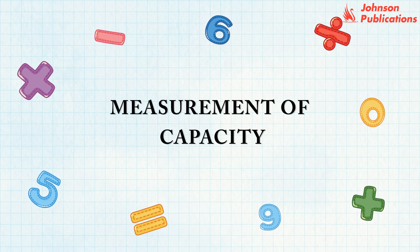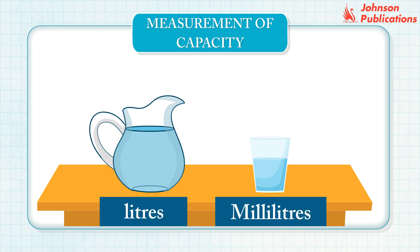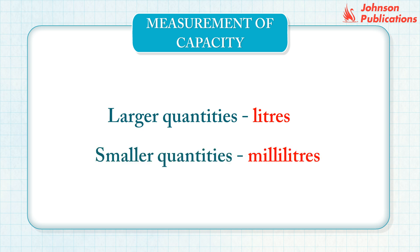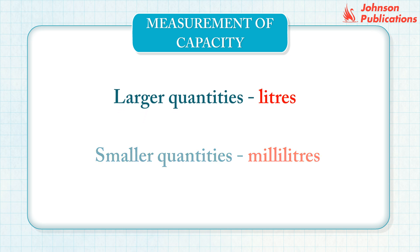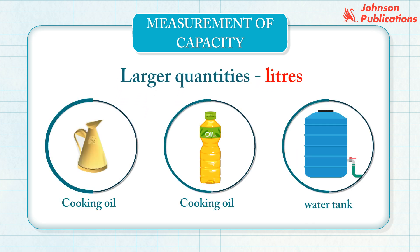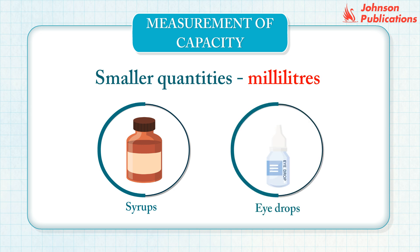Measurement of capacity. Capacity is the measure of how much liquid a container can hold. Capacity is measured in liters and milliliters. Larger quantities are measured in liters and smaller quantities are measured in milliliters. Examples: petrol, cooking oil, water in a tank, etc. are measured in liters. Whereas syrups, eye drops, etc. are measured in milliliters.